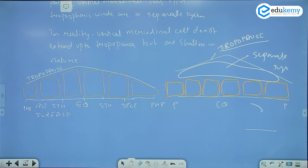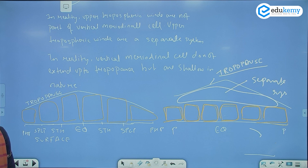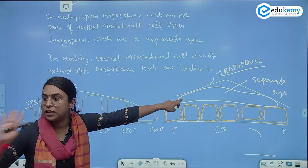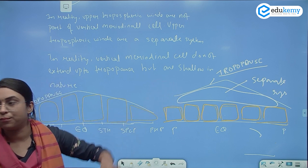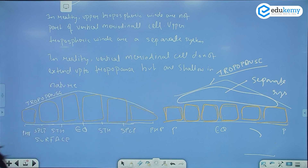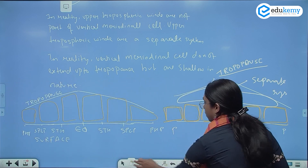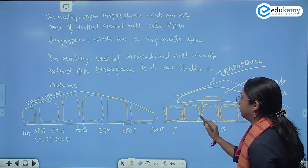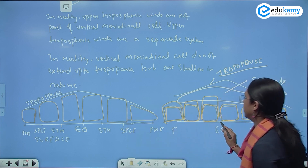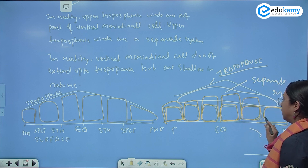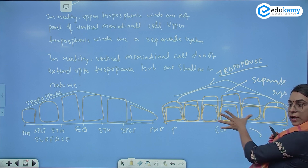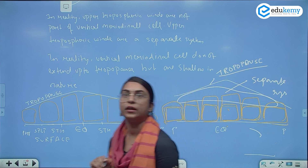What is the system in the upper troposphere? The upper troposphere is a separate system in itself. The height of the cells is different — the Hadley cell is tallest, then the Ferrell cell, then the polar cell.